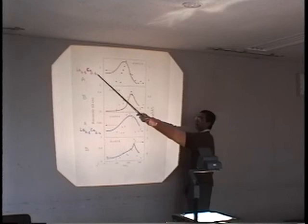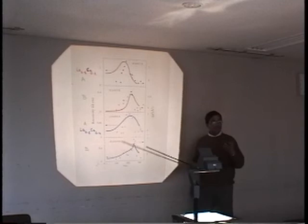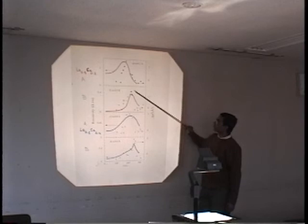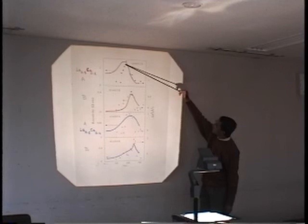Now for the same compound, if you take out the same compound and heat it longer so that the grain size changes, then you can transform this resistivity plot into this resistivity plot. Notice that the composition remains the same, but the resistivity changes by nearly 50 or 60 Kelvin.